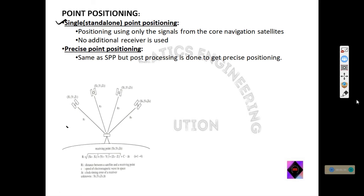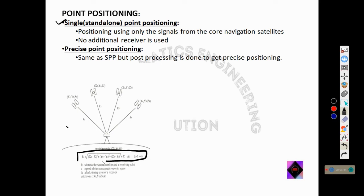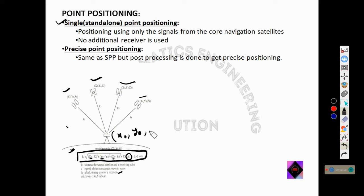In 3D positioning, four satellites are used (i = 1 to 4), and the four unknowns are x0, y0, z0, and Δ (the clock timing error of the receiver). Using standalone point positioning, we calculate the distance from each satellite and from that we determine the receiver's position x0, y0, and z0.